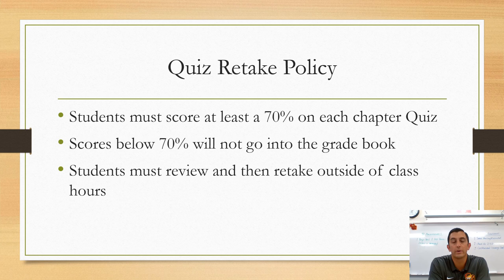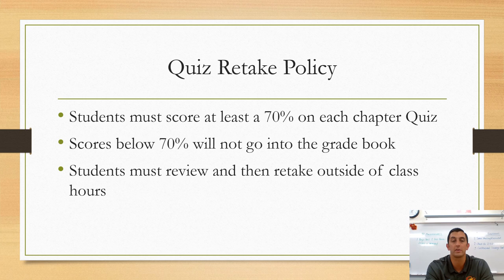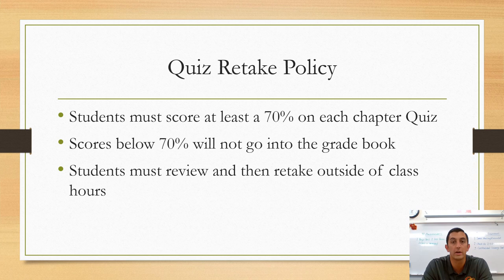There is a quiz retake policy that differs from many other classes. Students are required to hit at least 70% proficiency on all chapter or module quizzes. Any score below 70% will not be entered into the gradebook, which effectively counts as a 0%. Students can review and retake as many times as needed, but it must be outside of class hours — early morning, lunch, or after school. As long as students get there eventually, that's fine.